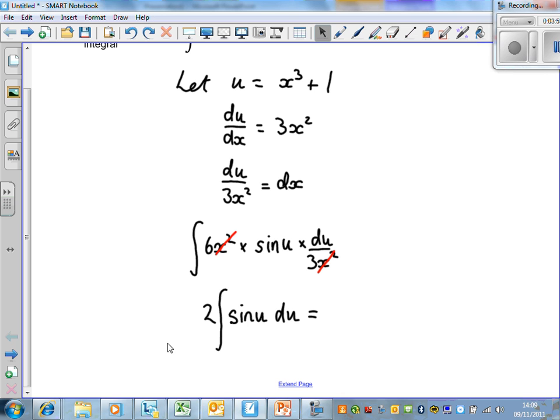Now this is our bread and butter. This is a fact which we need to recall. The integral of sine u is minus cos u. So this is minus 2 lots of cos u. Of course we also have to have the constant of integration, so plus c.